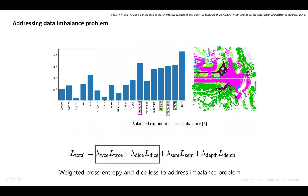We also address the data imbalance problem. As shown in the figure, the proportion of common classes is nearly 10,000 times higher than that of rare classes. To address this problem, we employ weighted cross-entropy and dice loss.